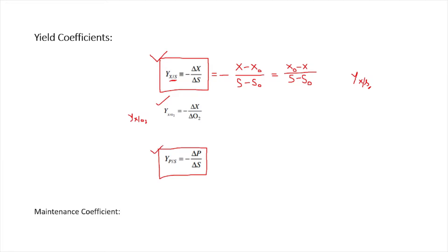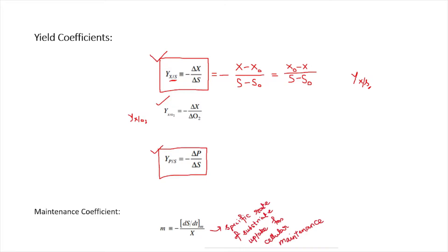The maintenance coefficient is the specific rate of substrate uptake for cellular maintenance — the rate at which substrate is being taken up for cell maintenance. It is given as m = −(ds/dt) / x, where ds/dt is the change in substrate concentration with respect to time and x is the cell mass concentration.